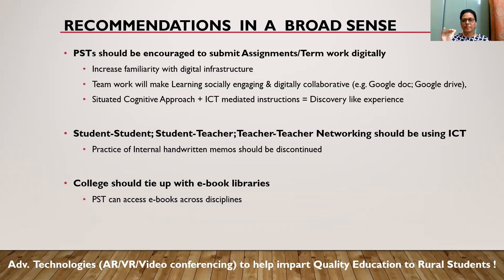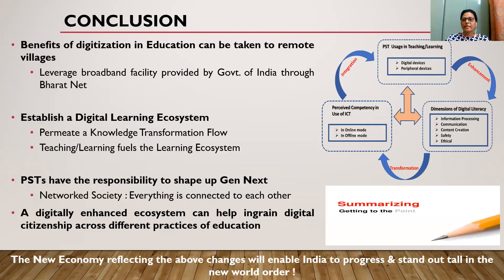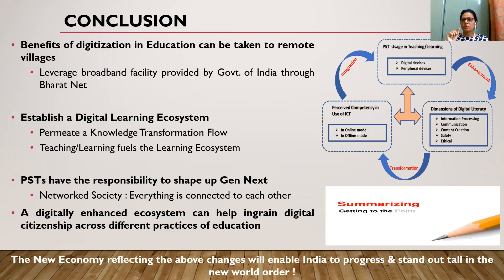Coming to the concluding part: we wish to ensure that the benefits of digitalization of education are taken to remote villages too, and for this we should leverage the broadband facilities provided by the Government of India through Bharat Net. This will help in our main goal of a digital learning ecosystem — to permeate a knowledge transformation flow — where teaching and learning is conceptualized as the energy that fuels the learning ecosystem and transfers information into different kinds of knowledge. The use of digital devices will enhance individuals to be digitally literate, and digital literacy will accordingly transform the usage of ICT in teaching and learning.